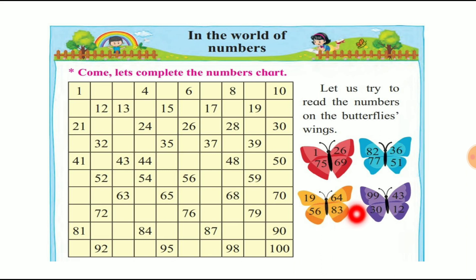Last butterfly: 99, 30, 33, 43, 12, 21. यहां पे हमें four butterflies दिये हैं, तो हमने read कर लिया है। इसको आप वापस read करके practice कर सकते हो।